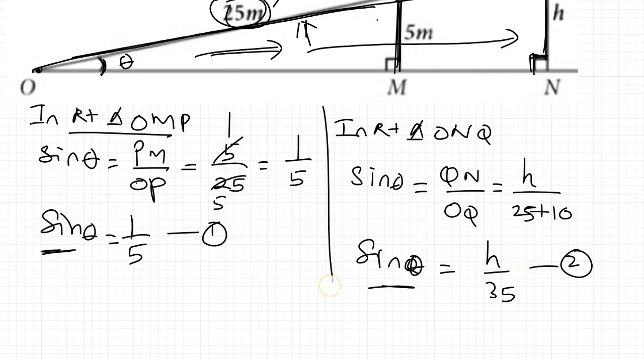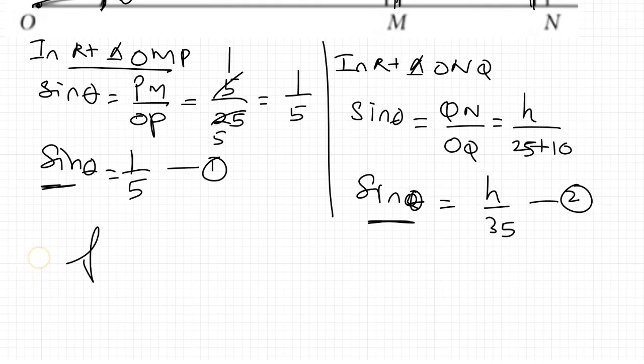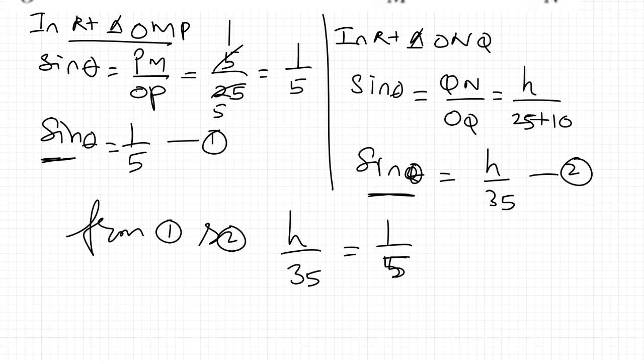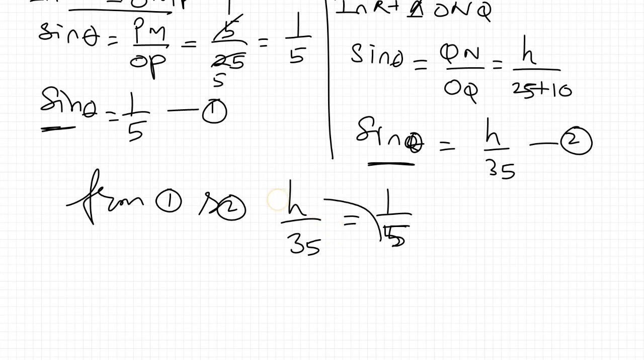Now in the right triangle sin theta, from 1 and 2, h by 35 equal to 1 by 5. So sin theta equal to, 1 by, 5h is 35.